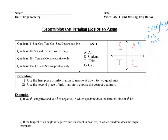S stands for sine, so sine as well as its reciprocal, cosecant, are positive in quadrant two. T stands for tangent — so in the third quadrant, tangent is positive as well as its reciprocal, cotangent. And in quadrant four, C is cosine, so cosine is positive as well as secant. So this chart shows positivity: all, sine, tangent, and cosine, as well as the reciprocals in each quadrant.